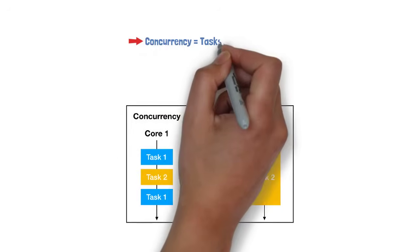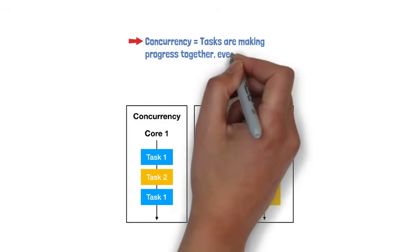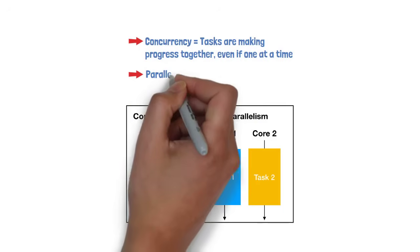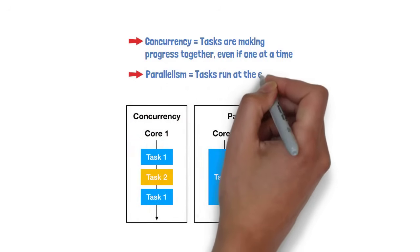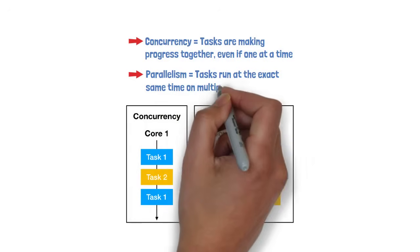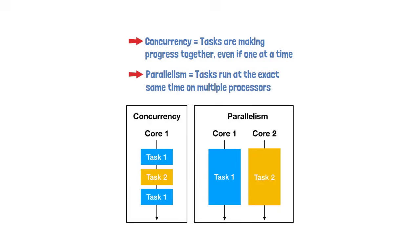Concurrency means tasks are making progress together, even if one at a time. Parallelism means tasks run at the exact same time on multiple processors. Both improve performance, but they're not the same.